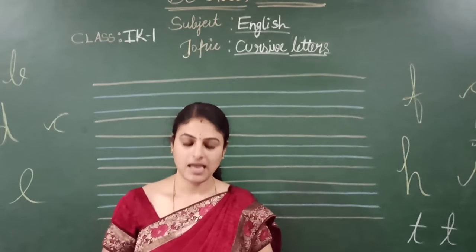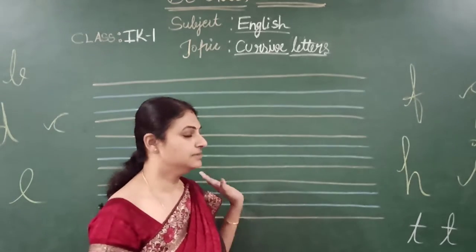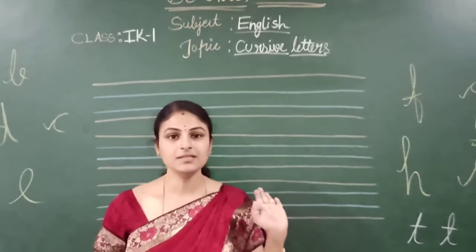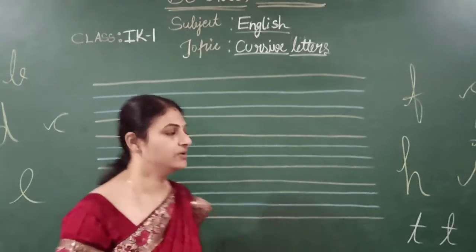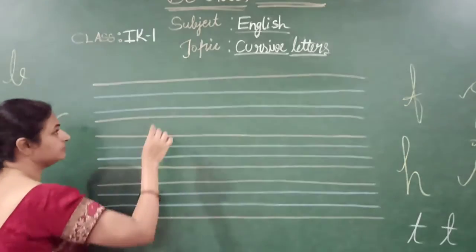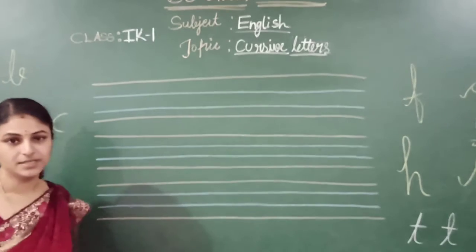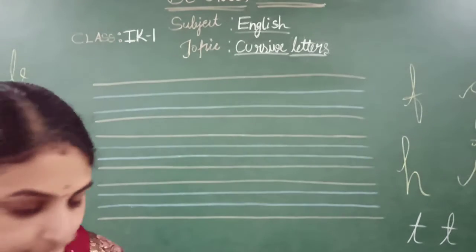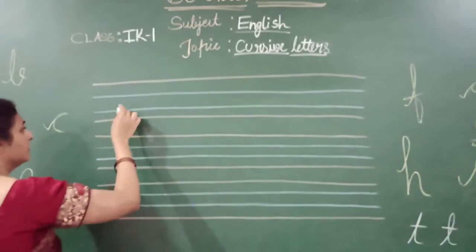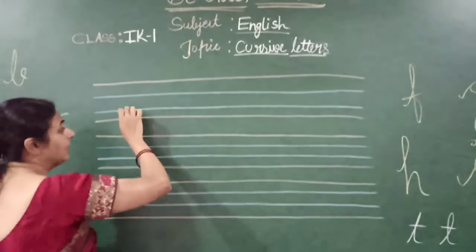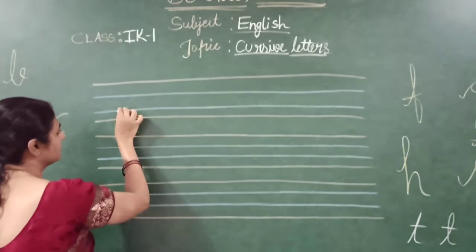Ok children. I have made revision A to Z, but this is the X, Y, Z letter. Four line format children. X — what we are going to write now. X.